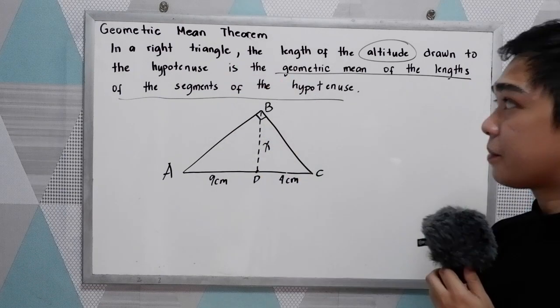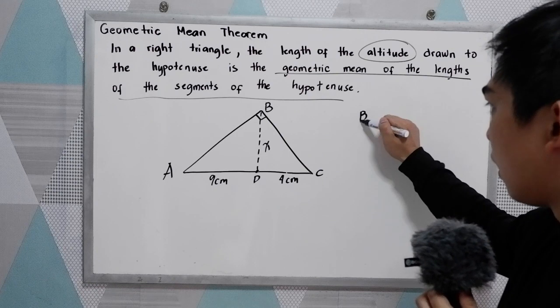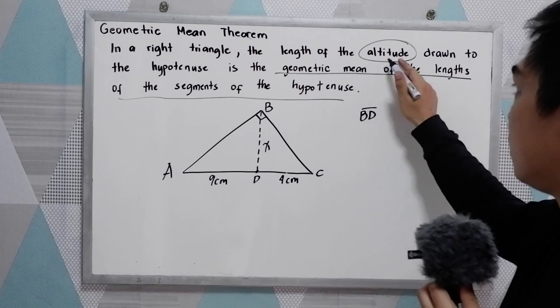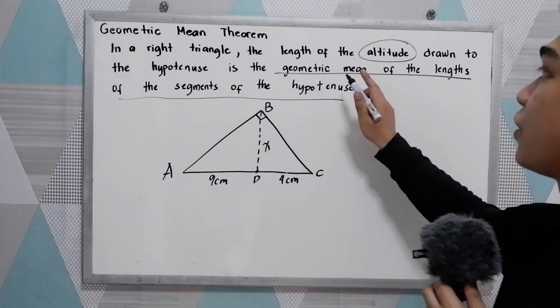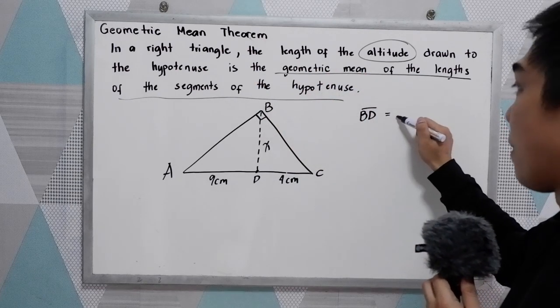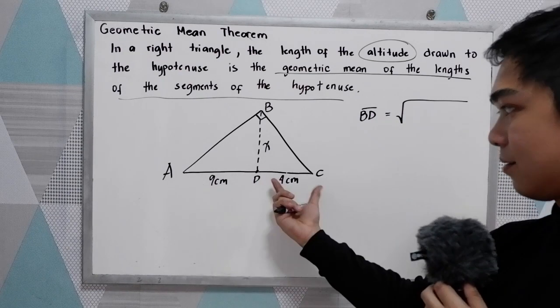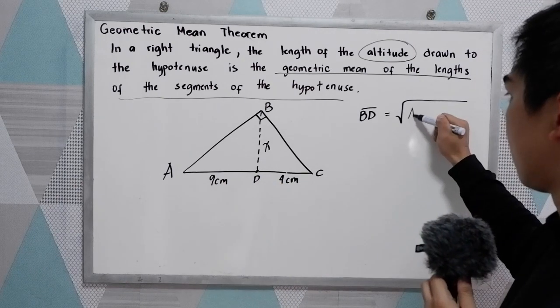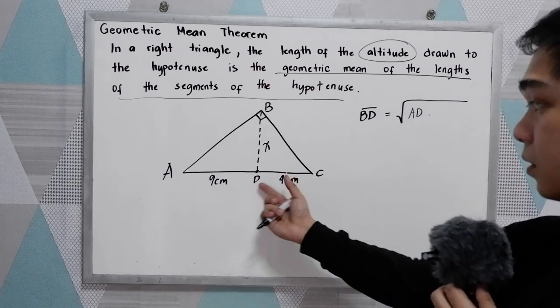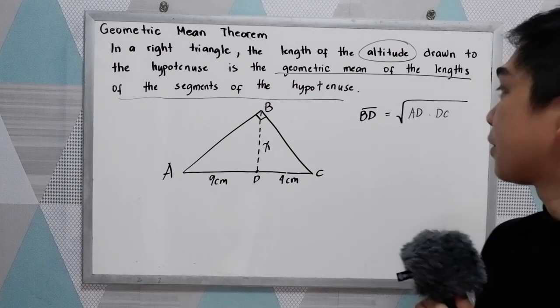Following the Geometric Mean Theorem, BD, the altitude drawn to the hypotenuse, is the geometric mean. The geometric mean is the square root of the length of our hypotenuse. So we have AD times DC. We need to get the geometric mean.